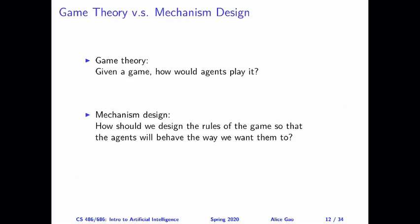For mechanism design, the question is a little bit reversed. Mechanism design says we want to design a game in a way such that the agents will behave in a particular way. So given that we want the agents to behave in a particular way, how should we design the rules of the game? You can see that the two are a little bit reversed of each other. Often mechanism design is referred to as reverse game theory.